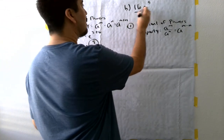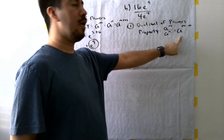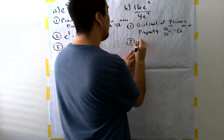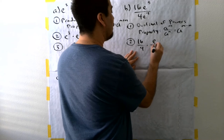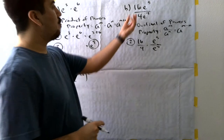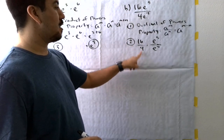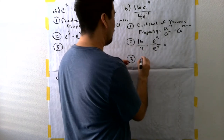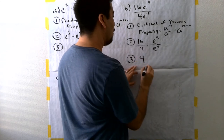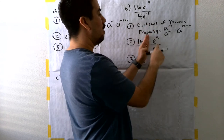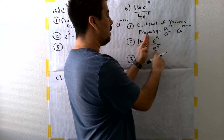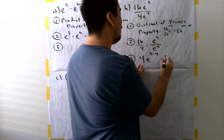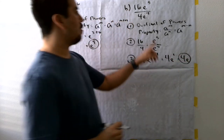You might be wondering about the 16e and 4e — those aren't the same values to apply the property directly. So I'm going to split these into two separate fractions: 16 over 4, times e to the fifth over e to the fourth. I can compute 16 divided by 4, which is 4, and then apply the quotient of powers property to the e terms — since the base e is the same. That gives 4 times e to the fifth minus fourth, which is 4e to the first power, or just 4e.